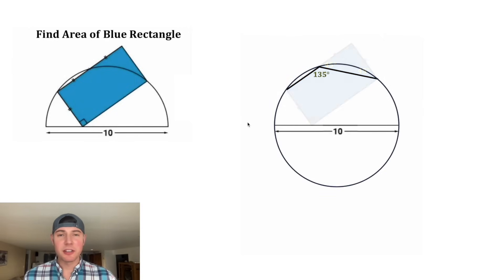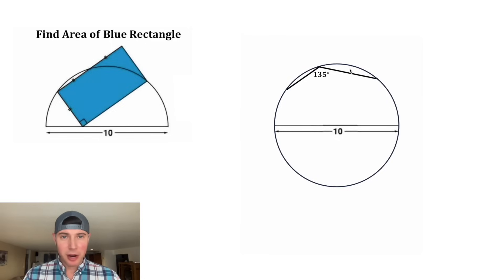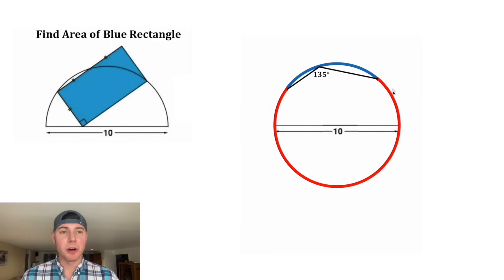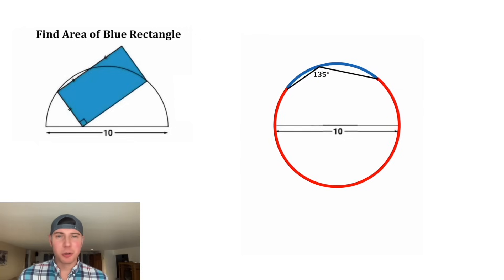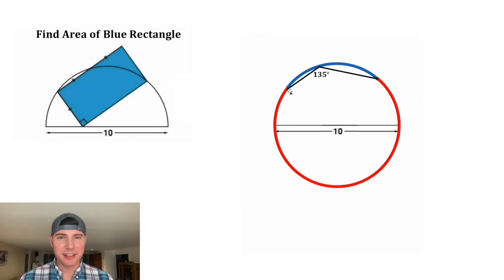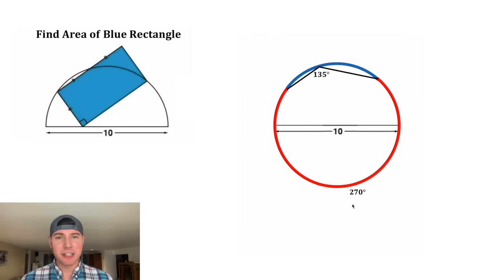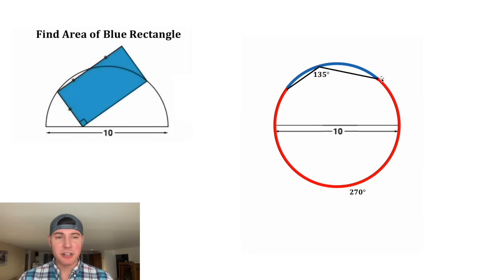Next, let's finish up the circle and I want to focus on this 135°. This is called an inscribed angle, and if we look at it, it's cutting the circle into two parts: this red arc and this blue arc. A cool property about inscribed angles is they are exactly half of the arc that they subtend. So this red arc is going to be double the 135°, so it'll be 270°.